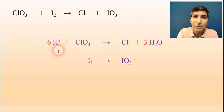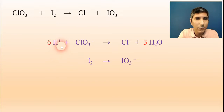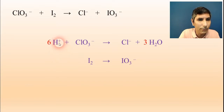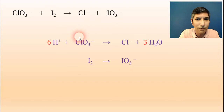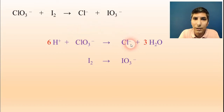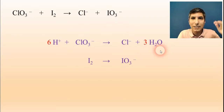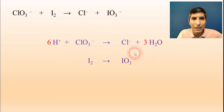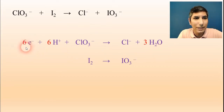Now I'm ready to balance the charge. On the left side I have +6 from the hydrogen ions and −1 from the chlorate, giving a total charge of +5. On the right side there is −1 total. The difference between +5 and −1 is 6, so I need to add 6 electrons to the left side.